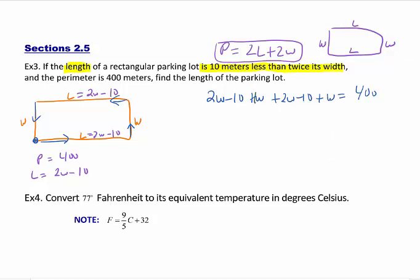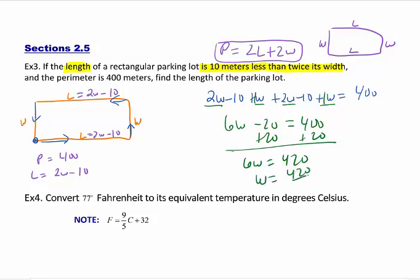So at this point right now, I'm just going to add and collect my like terms. So I have 3 plus 2, which is 5, plus 1, which is 6. And I have a minus 20. So now I'm going to add 20 to both sides. 6W equals 420. W equals 420 divided by 6, which is 70.